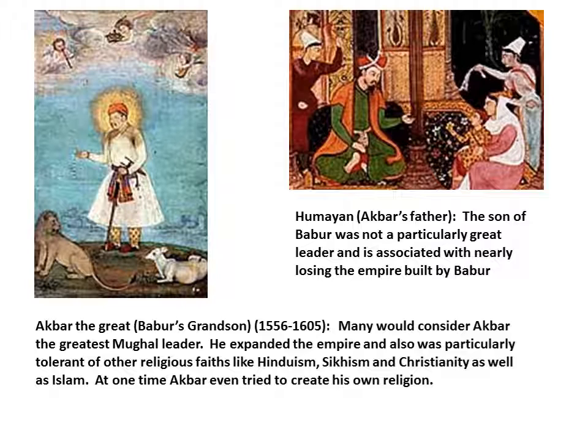Akbar the Great, pictured with the blue background and the lion, was the grandson of Babur, the founder of the Mughal dynasty. His father was blamed for losing much of the empire, but Akbar by contrast expanded the empire and was noted for his religious tolerance. He accepted the presence of Hinduism, Sikhism, Christianity, Buddhism, and of course Islam. At one time Akbar even tried to create his own religion, a fusion of these different faiths on the Indian subcontinent. He was considered probably the most noble and greatest of the leaders of the Mughal dynasty, overseeing it at its peak.